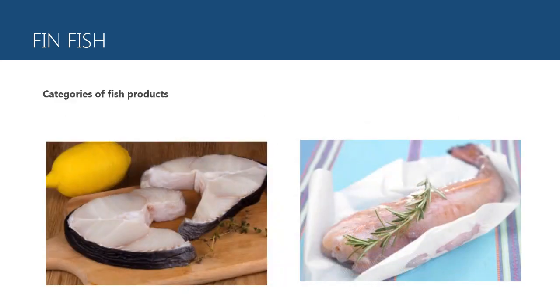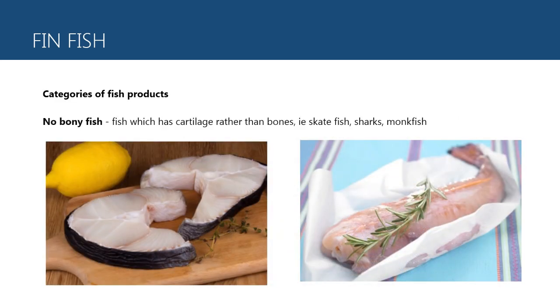Next is non-bony fish — fish which has cartilage rather than bones. Examples: skatefish, shark, and monkfish.